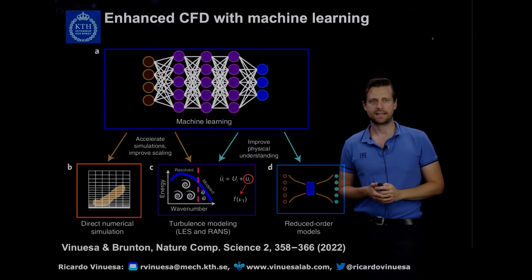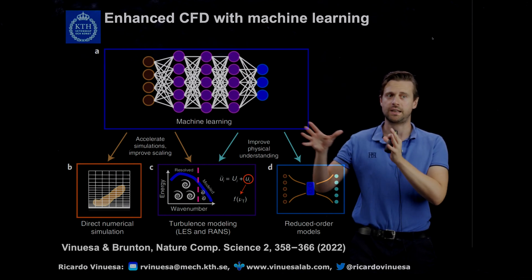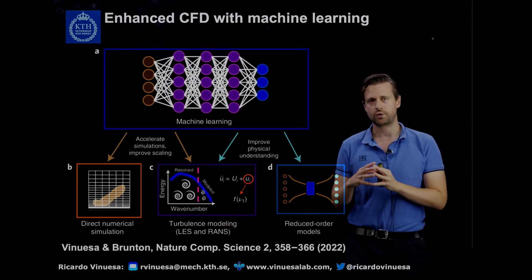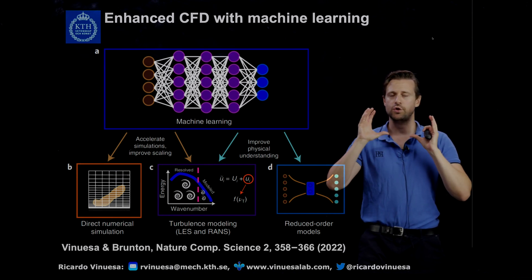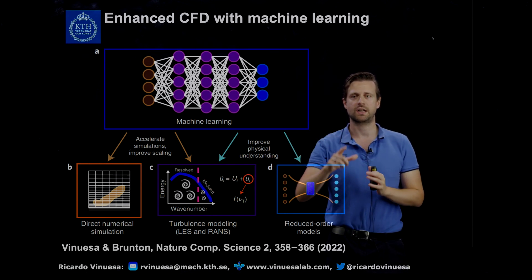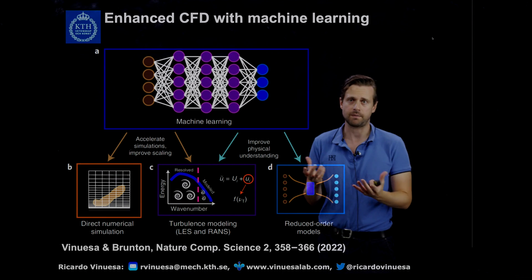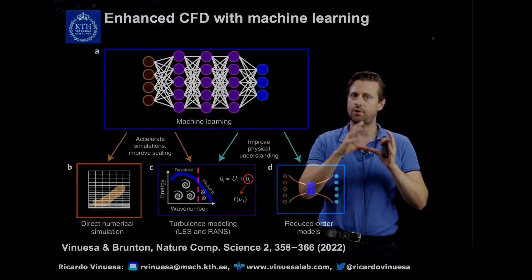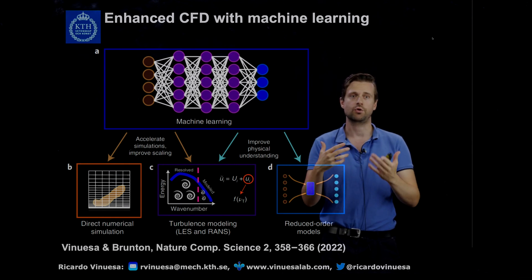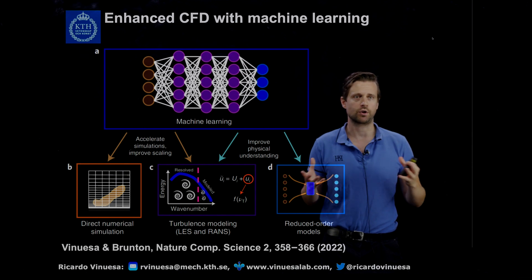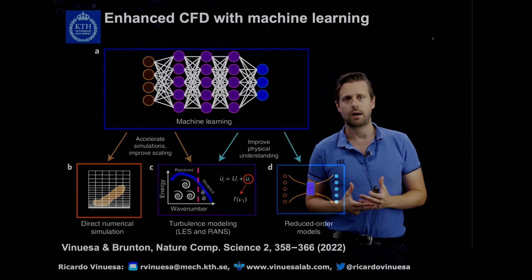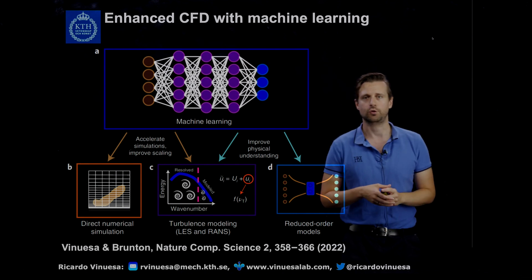This is a study we recently published together with Steve Branton in Nature Computational Science. We show that you can use machine learning for three main things: to accelerate direct numerical simulations, to improve modeling in the context of LES and RANS, and to obtain more robust reduced order models — and that's the topic we're going to be discussing today, zooming in on how machine learning can help in the context of ROM development for turbulent flows.